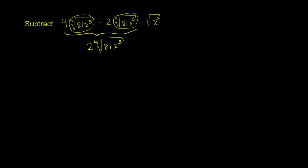And then we still have this minus the regular principal square root of x to the 3rd. Now I want to try to simplify what's inside of these under the radical sign so that we can, in this example, actually take the 4th root, and over here actually take the principal square root. So first of all, let's see if 81 is something to the 4th power, or at least can be factored into something that is a something to the 4th power.